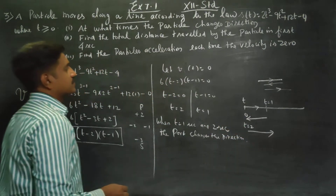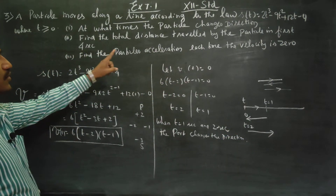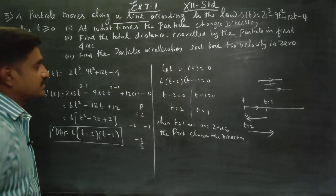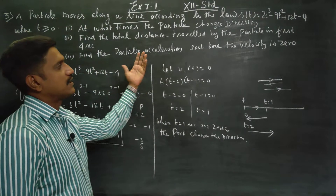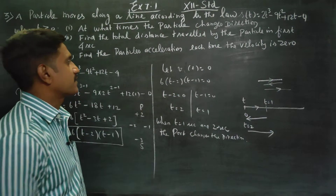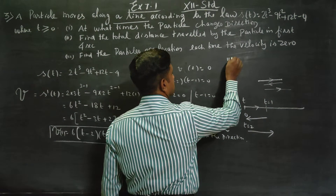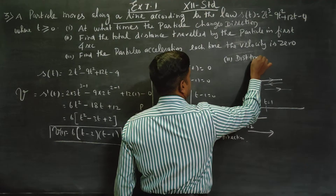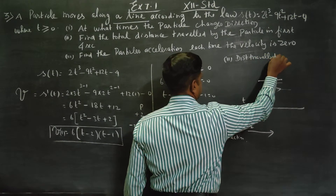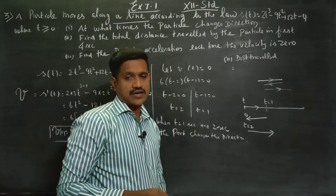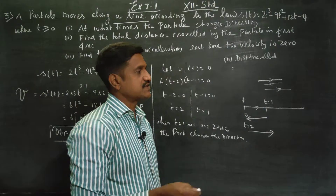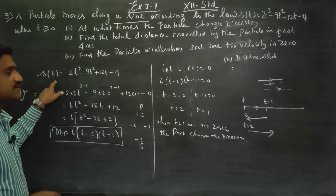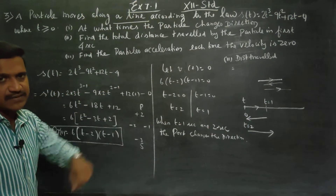Second part: find the total distance traveled by the particle in the first 4 seconds. The particle is traveling, and we need the total distance traveled in 4 seconds. Since the particle changes direction, we cannot simply use the endpoint difference.